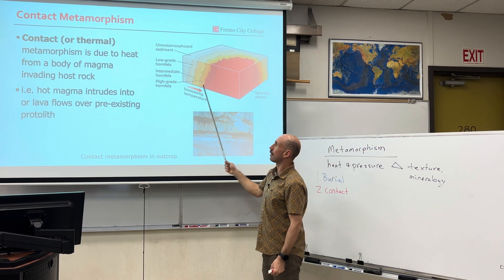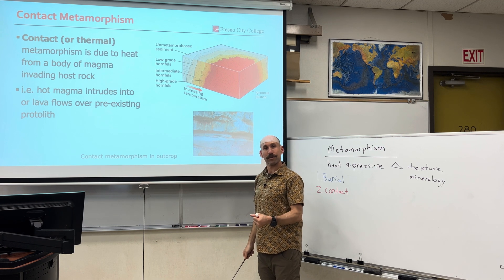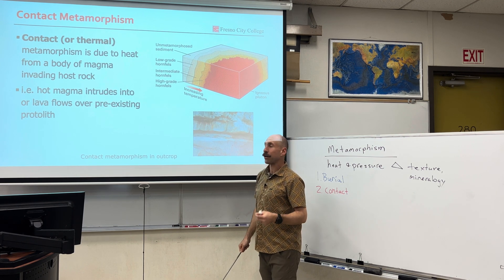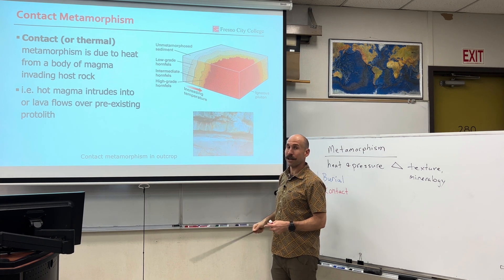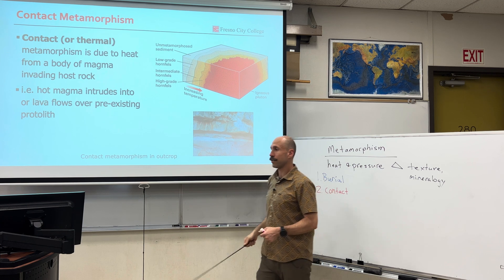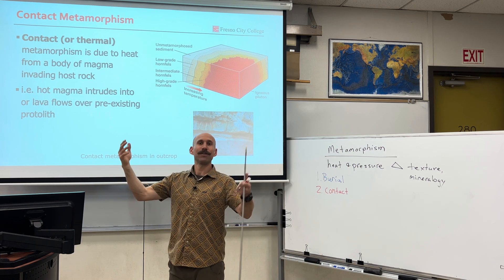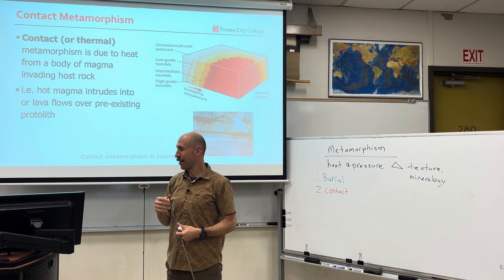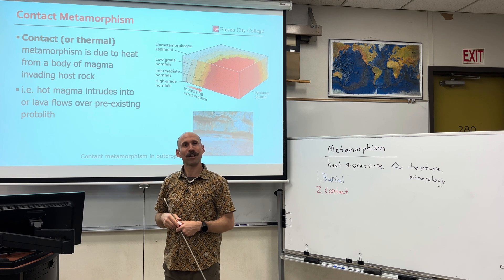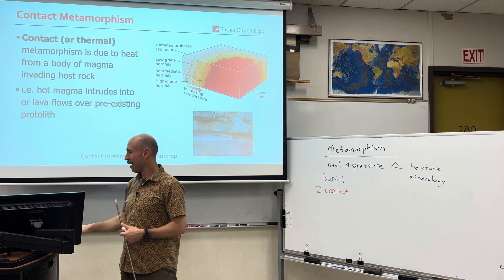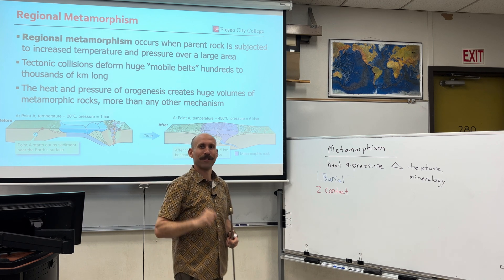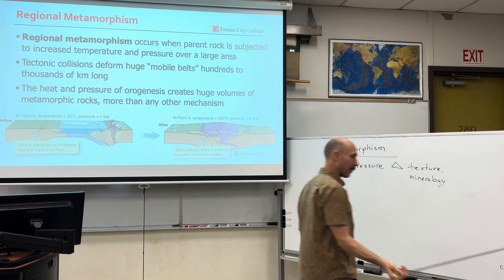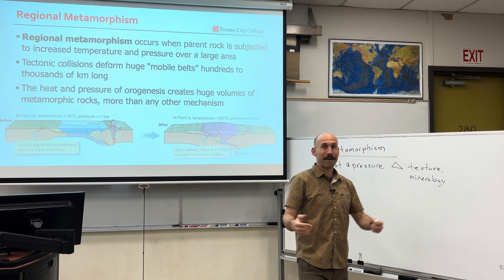We could look at a rock — hornfels — identify it, and then infer contact metamorphism, especially if it's located next to an igneous intrusion such as a pluton. This gets at depositional environment — the name of the game. What is the geological history of a given area? How do we know that? The rocks tell us. That's my favorite question and my favorite answer.